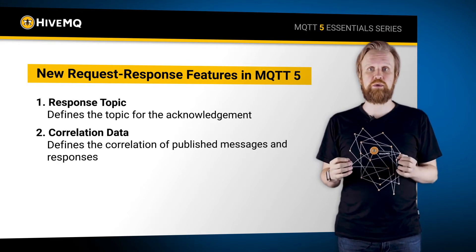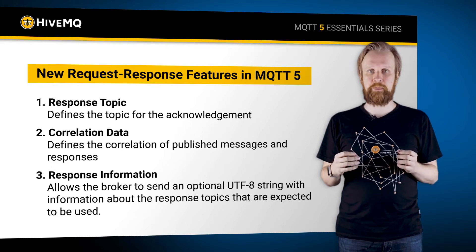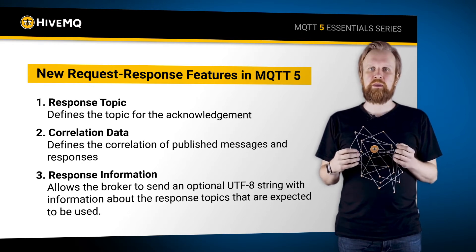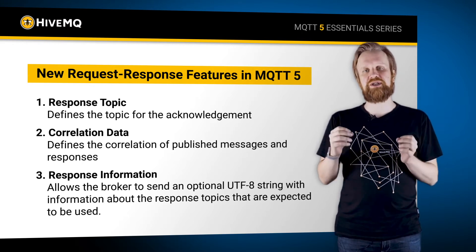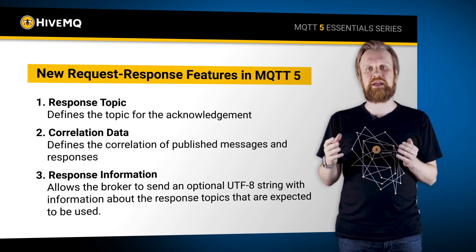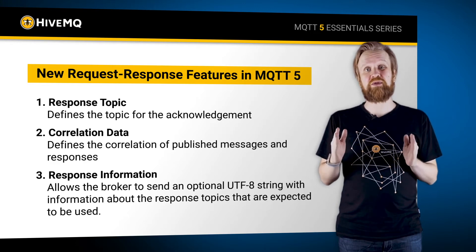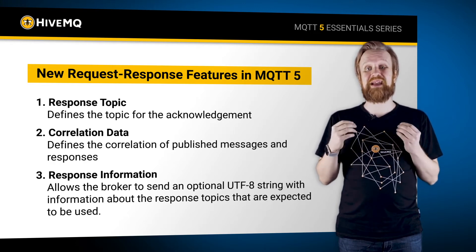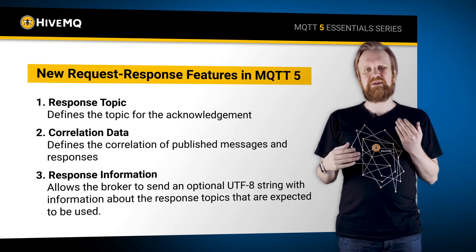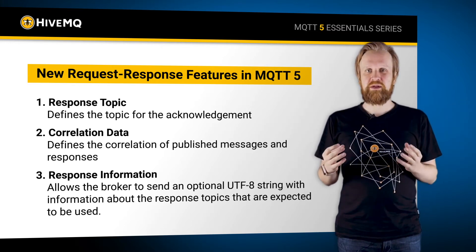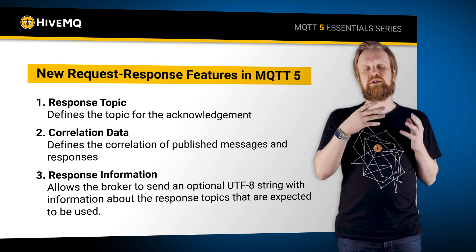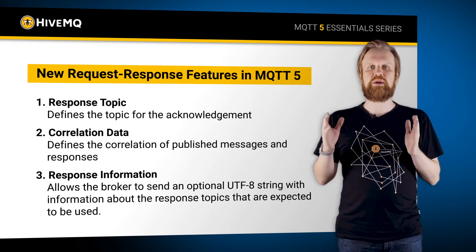A third feature is the so-called response information. This is an optional field that a client can set on its connect. When the client sets response information equals true, then the broker is allowed to send them an arbitrary string defining the part of the topic tree where response topics are expected. This is very important to really allow implementation of transparent clients and, for example, transparent PLCs that react to the response information based on what broker they use.